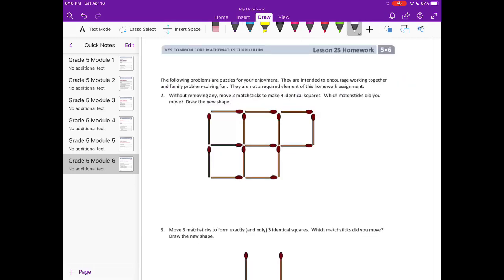Okay, so these next problems are just for fun. They're not a required element of the homework assignment, so try not to get too stressed over it. And if you want to see what answers I've come up with, then go ahead and keep watching. So number two says, without removing any, move two matchsticks to make four identical squares. Which matchsticks did you move? Draw the new shape.